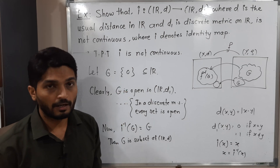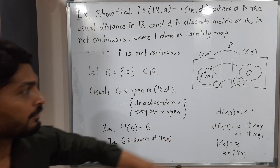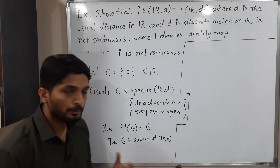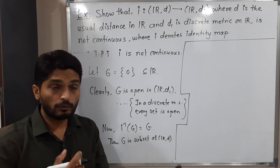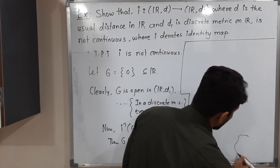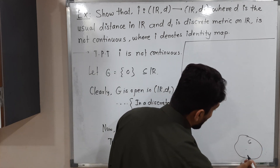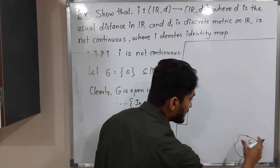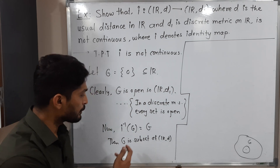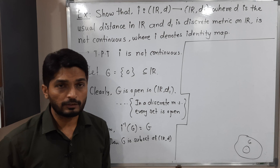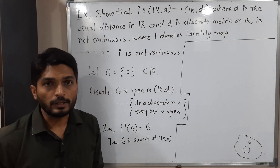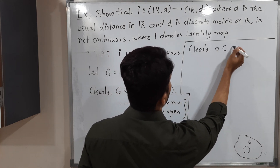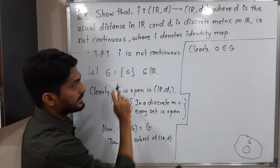We have to prove this set is not open in Rd. To prove a set is open, we take an arbitrary point and try to find a ball around it that entirely lies inside the set. Here we have to prove it is not open. G has only one point, so we can take only one point: 0. Clearly 0 belongs to G since G is the singleton {0}.